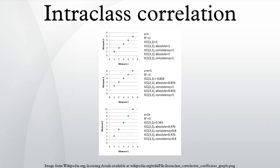The reason for this is that in the setting where an intraclass correlation is desired, the pairs are considered to be unordered. For example, if we are studying the resemblance of twins, there is usually no meaningful way to order the values for the two individuals within a twin pair. Like the interclass correlation, the intraclass correlation for paired data will be confined to the interval [−1, 1].